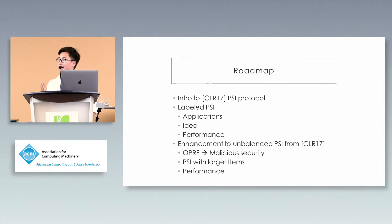I'll give a roadmap of my talk. First, we'll give an introduction to our private set intersection protocol published at CCS last year, and then introduce the improvements we made during this year. First is a new primitive called label PSI. I'll introduce its definition, applications, implementation, and performance.